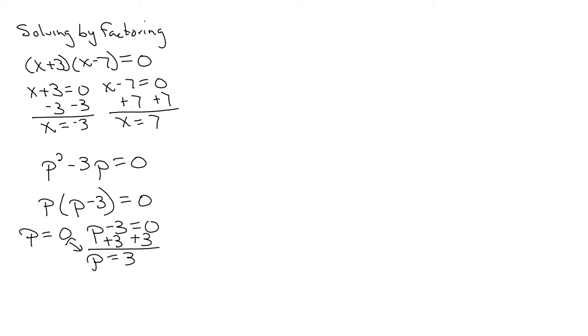If we have something like this, y²-25=0, again we need to factor it. It's set equal to 0. So we're going to use the difference of squares. So y and y, 5 and 5, plus and minus. So we have (y+5)=0, (y-5)=0.